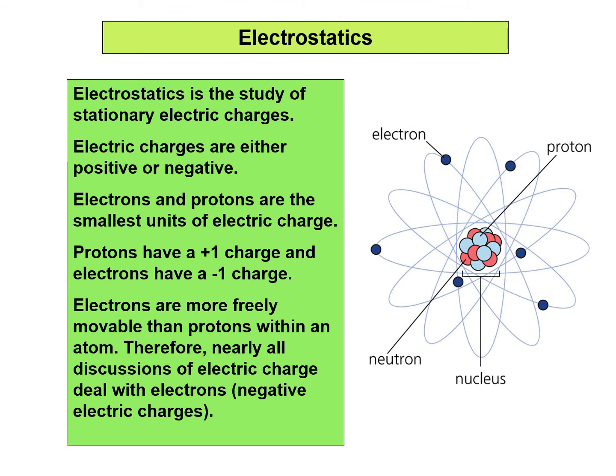For electrostatics — the study of stationary electric charges, hence the term 'statics' — electric charges are either positive or negative. Looking at the atom, our positively charged protons are incorporated into the nucleus, and then we have our electrons within the shells at certain distances from the nucleus. Electrons and protons are the smallest units of electric charge; protons are given a plus-one charge and electrons have a minus-one charge.